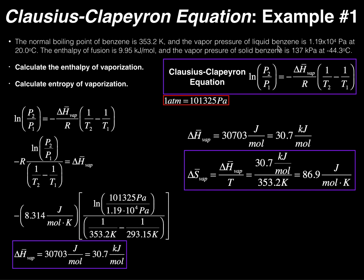We're not going to need all of that information. We're first solving for the enthalpy of vaporization, so let's rearrange the Clausius-Clapeyron equation. Multiply both sides by negative R — the negative R moves to the left side. Then divide both sides by the quantity 1/T2 − 1/T1. This gives us: ΔH_vap = [ln(P2/P1) / (1/T2 − 1/T1)] × (−R).